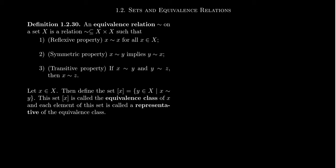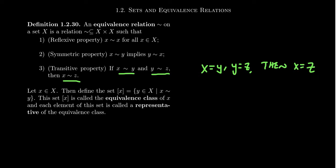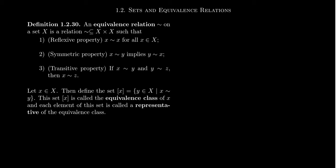Lastly, for an equivalence relationship, we require the transitive property. This tells us that if X is related to Y and Y is related to Z, then X is related to Z as well. We see a similar property for equality: if X equals Y and Y equals Z, then it must be that X equals Z.